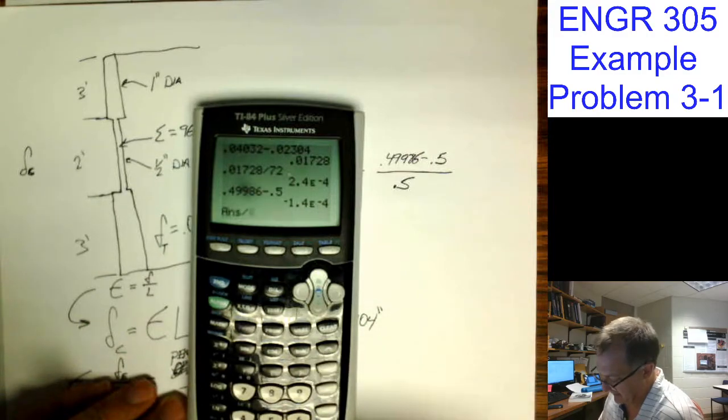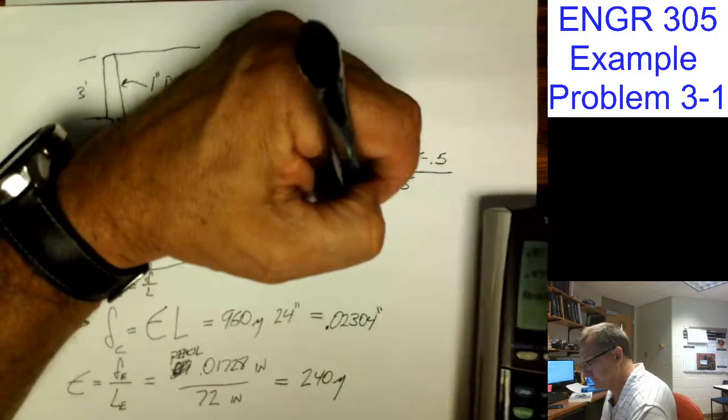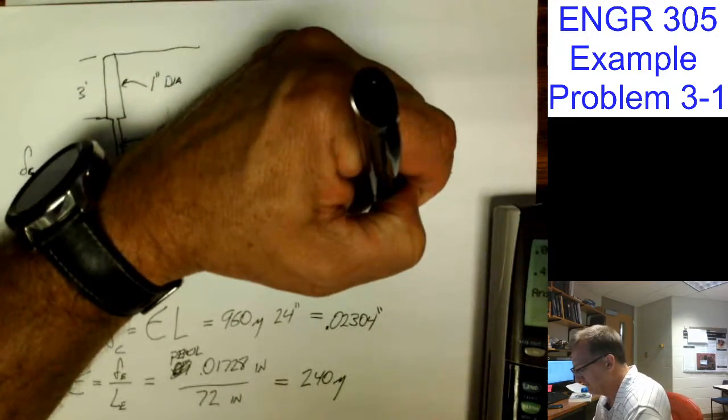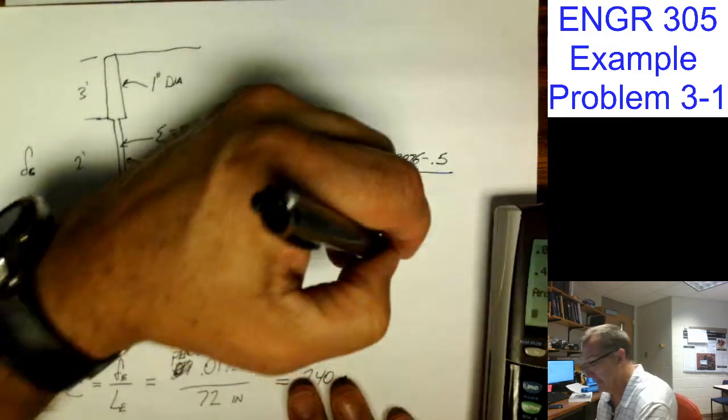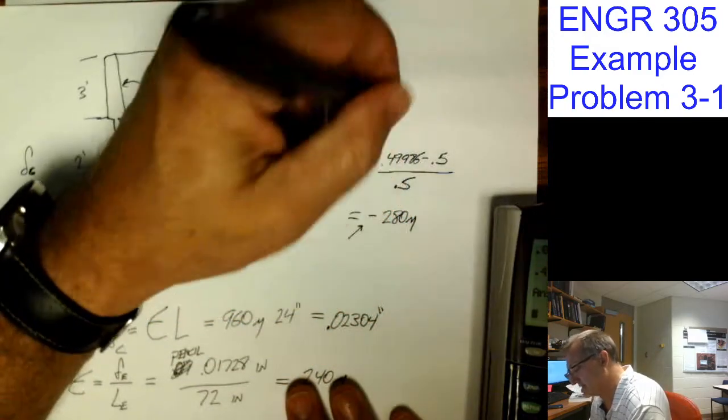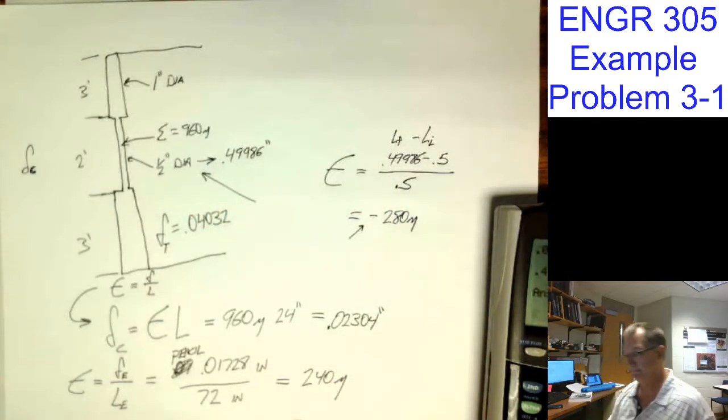Enter. 0.49986 minus 0.5, enter, divided by 0.5, enter. So that equals a negative 280 micro. And you see how that sign showed up? Because I did it length final minus length initial. So that sign shows up. That means it shrunk.